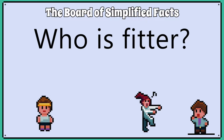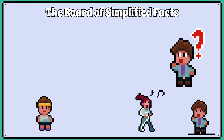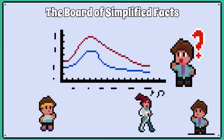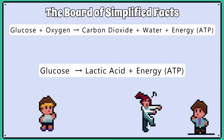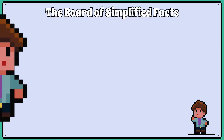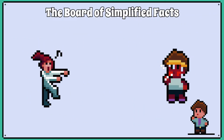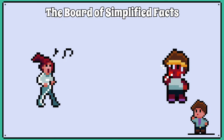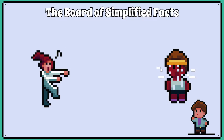Who is fitter? Often in an exam, you must interpret graphical data and apply your knowledge about aerobic and anaerobic respiration to determine who is fitter and why. But first, some important points. In general, fitter people show the following traits regarding exercise.